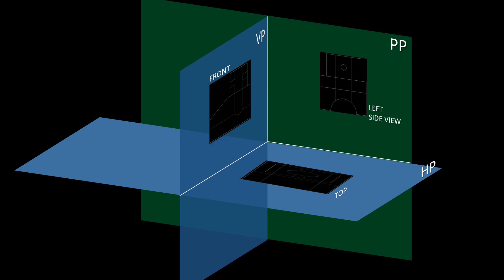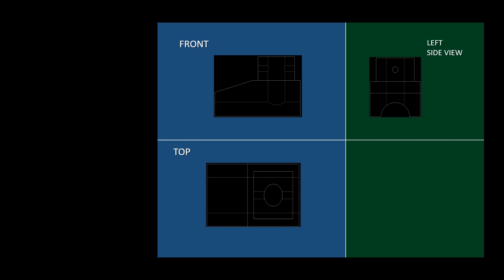We have three different views and three different planes consolidated into a single 2D plane. We place the horizontal plane and rotate it clockwise. We rotate the vertical plane and the profile plane in the same direction, giving us the left side view and front view in their correct positions.